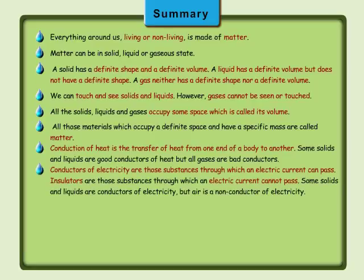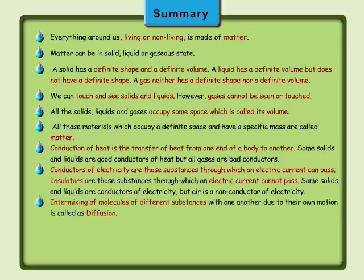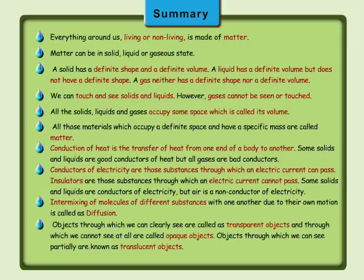Conductors of electricity are those substances through which an electric current can pass. Some solids and liquids are conductors of electricity but air is a non-conductor of electricity. Intermixing of molecules of different substances with one another due to their own motion is called diffusion. Objects through which we can clearly see are called transparent objects, those through which we cannot see at all are called opaque objects, and objects through which we can see partially are known as translucent objects.